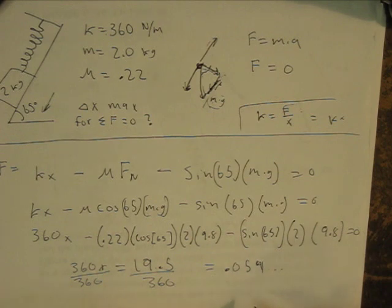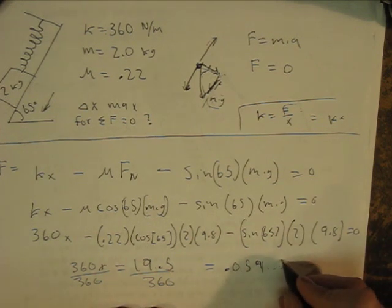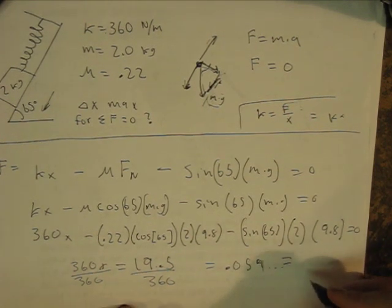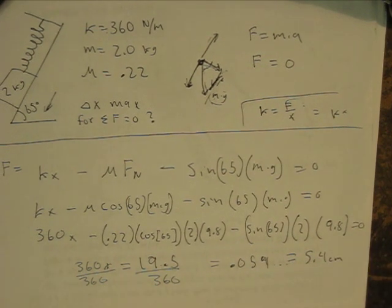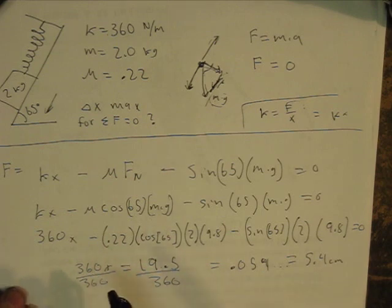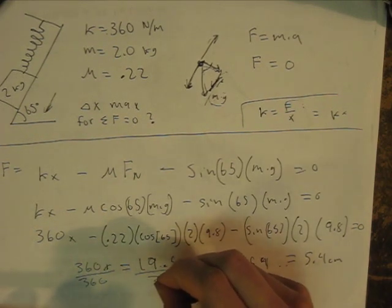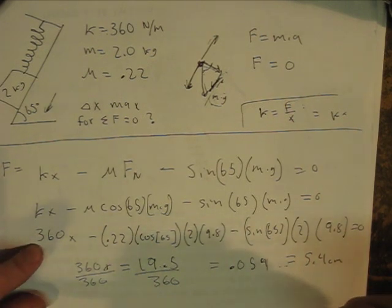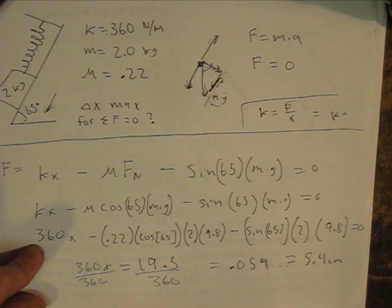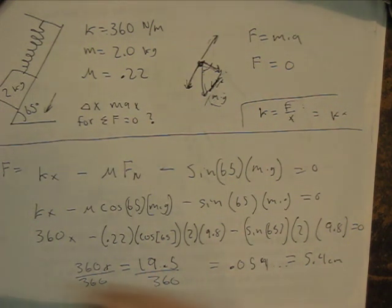That's in meters. If you want to get it in centimeters, you times it by 100, and you get 5.4 centimeters. So what does that mean? That means that you can pull on that spring for, you can hold the spring and then pull for 5.4 centimeters on that spring, and that block will still stay at where it was in the beginning, because it's at equilibrium, and the force acting against it is the force of friction.